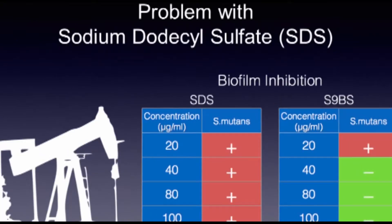Sodium decyl sulfate (SDS) is a synthetic surfactant added to conventional toothpaste. It's made from a non-renewable resource, petroleum. Whereas S9BS, the biosurfactant used in ToothSaver, can be produced from agro-industrial waste. In order to inhibit the same amount of biofilm, SDS requires triple the concentration that S9BS does.